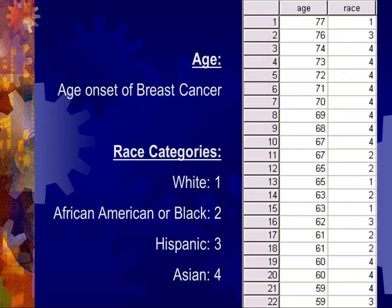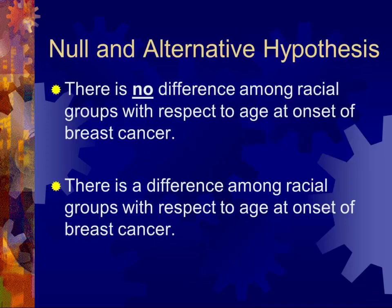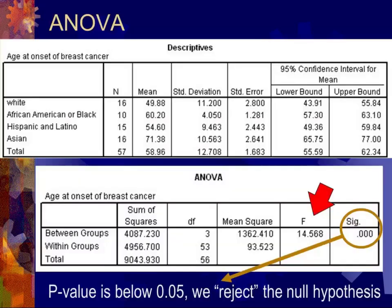Here's an example looking at the potential relationship between age at onset of breast cancer in women and different race categories — white, African-American, Hispanic, or Asian. We form a hypothesis: the null hypothesis is that there is no difference among racial groups with respect to age at onset of breast cancer. The ANOVA output gives descriptive statistics including the number in each group, the mean age at onset, the standard deviation, and standard error.